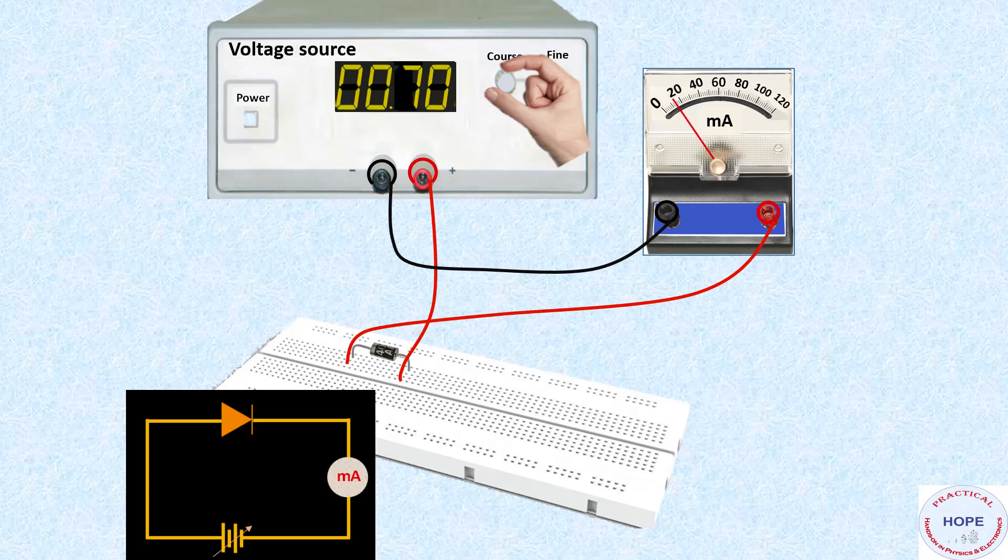Now we'll increase the voltage further to 0.7. Then you can see the current increase to about 18 milliamperes. Now beyond 0.7, we have to increase the voltage in very small steps like 0.71, 0.72, 0.73, 0.74, 0.75. There is no need to go beyond 0.75 volts. Since we are already getting current of about 70 milliamperes.